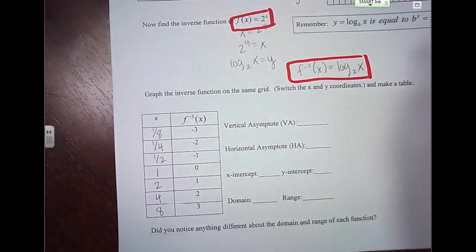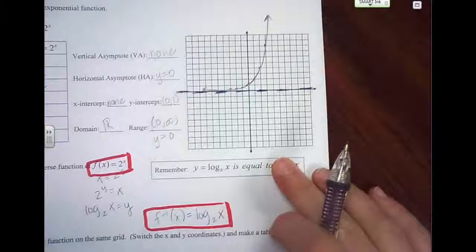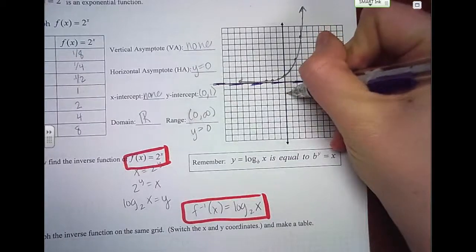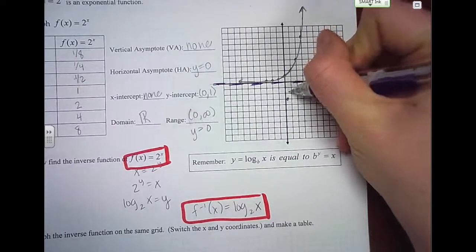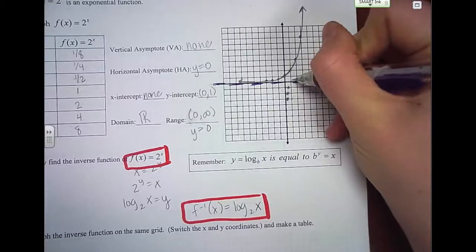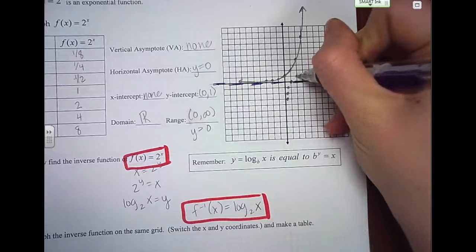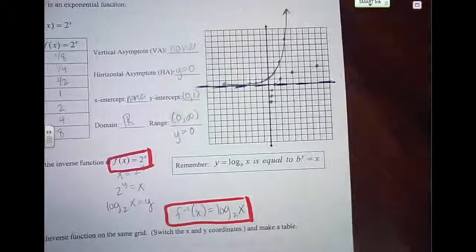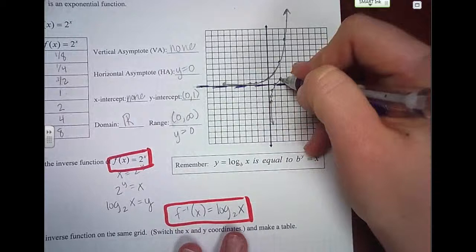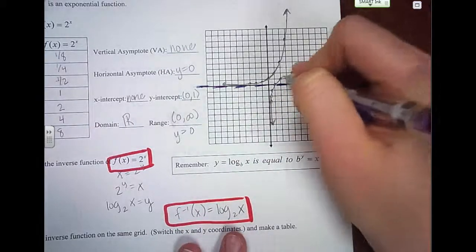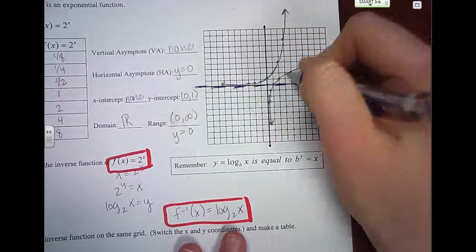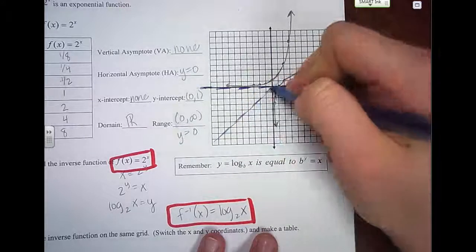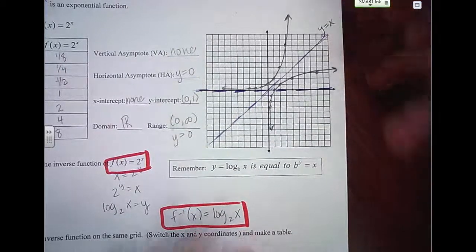Let's graph those on our same grid. The first point is one eighth, negative 3 — go a little to the right and down 1, 2, 3. Then one fourth, negative 2. One half, negative 1. One, 0. Two, 1. Four, 2. And 8, 3. So there's our curve. Notice — inverse functions are special in that they are mirror images over the line y equals x. They flip over that line.